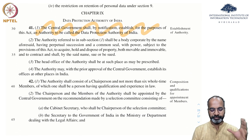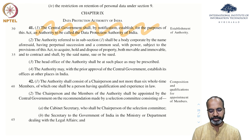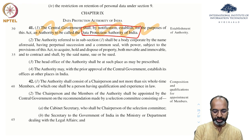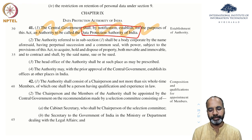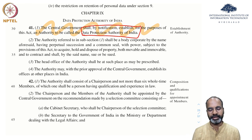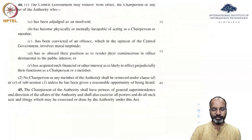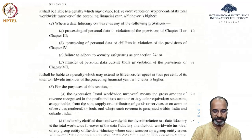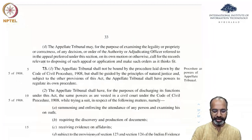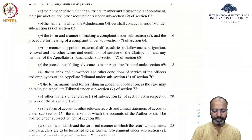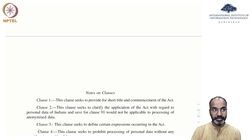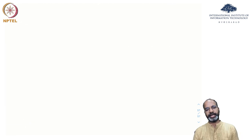The central government shall, by notification, establish an authority called the Data Protection Authority of India. If this bill gets passed, there will be an organization called the Data Protection Authority of India. The rest of the PDP bill goes into details of what this authority should be, who should be recruited, who should be on the board, and what powers they have. The end of the document summarizes all the clauses mentioned. That's the PDP bill.